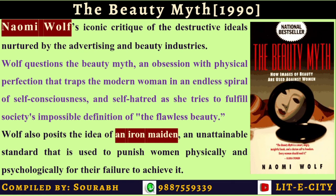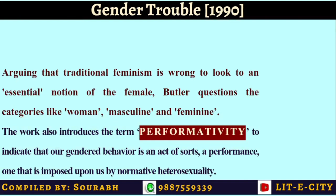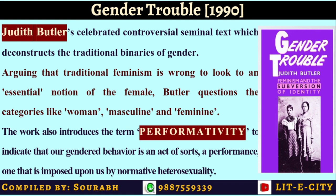Wolf also posits the idea of an 'iron maiden' — an unattainable standard used to punish women physically and psychologically if they fail to achieve it. Gender Trouble by Judith Butler is a celebrated, controversial, and seminal text which deconstructs the traditional binaries of gender, arguing that traditional feminism is wrong to look to an essential notion of the female. Butler questions even the basic categories of 'women,' 'masculine,' and 'feminine.' The subtitle — Feminism and the Subversion of Identity — indicates her argument. She introduces the term 'performativity' to indicate that our gendered behavior is actually a performance imposed upon us by normative heterosexuality.